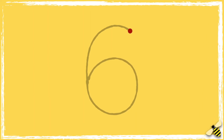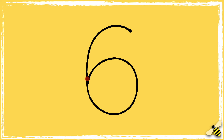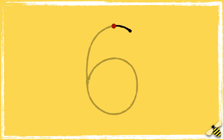Let's have a go at writing the number 6. Curve it down and then loop it into the middle. Let's have another go. This time I want you to draw the number in the air with your finger. Curve it down and then loop it into the middle.